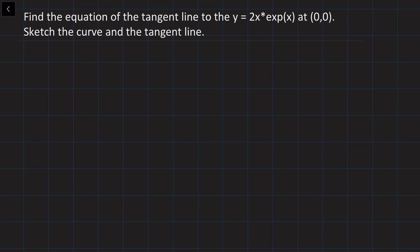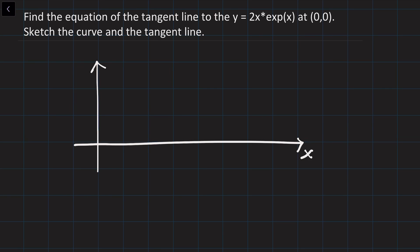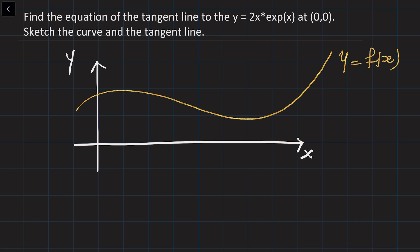So let's first discuss our strategy. Let's say you are given some curve on the rectangular coordinates — so it's going to be the x-axis and y-axis — and the equation of this curve is given as y equals f of x. What you need to do is figure out the equation of a tangent line at some point x0. If this point is given as x0, then the coordinates of this point are going to be x0 and f of x0. So we need to find the line which is just touching this curve at this point.